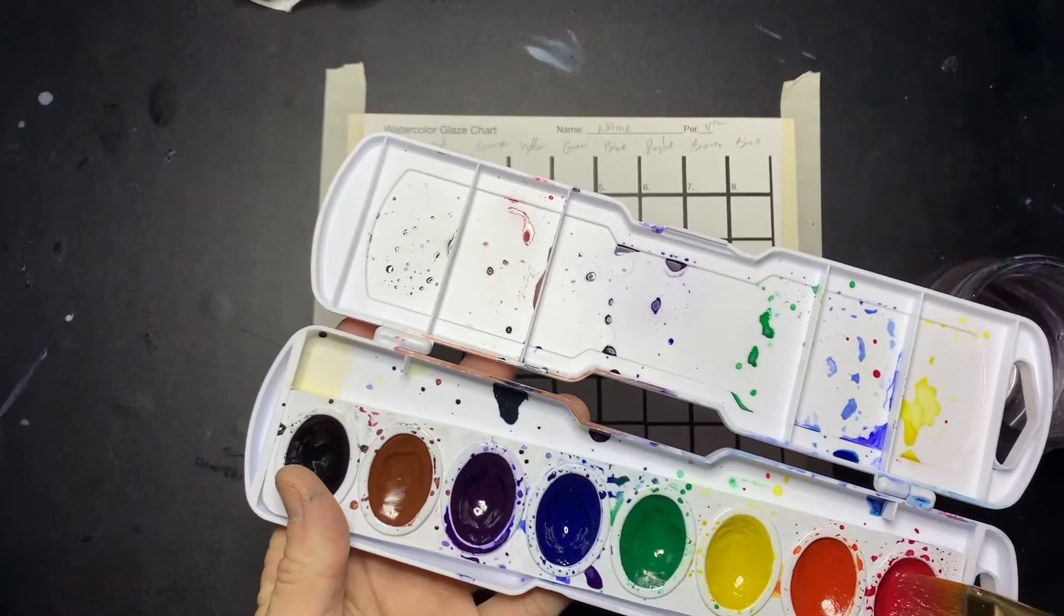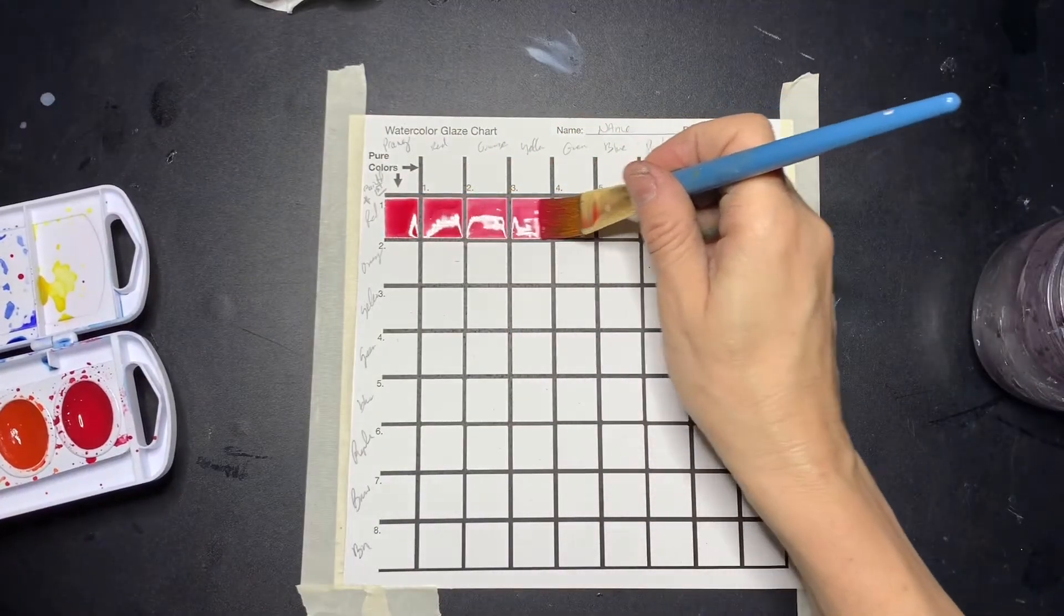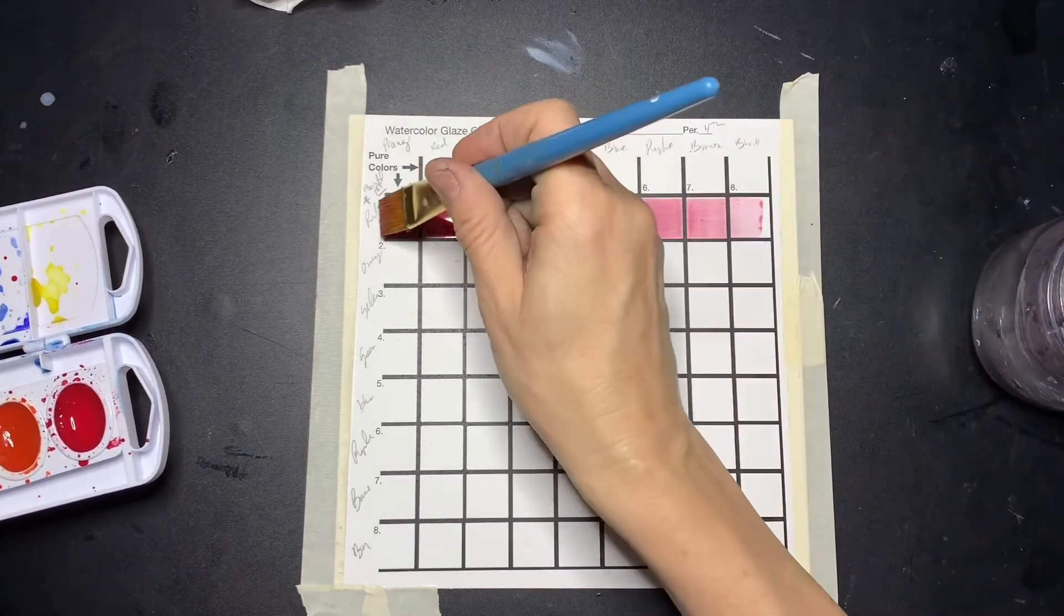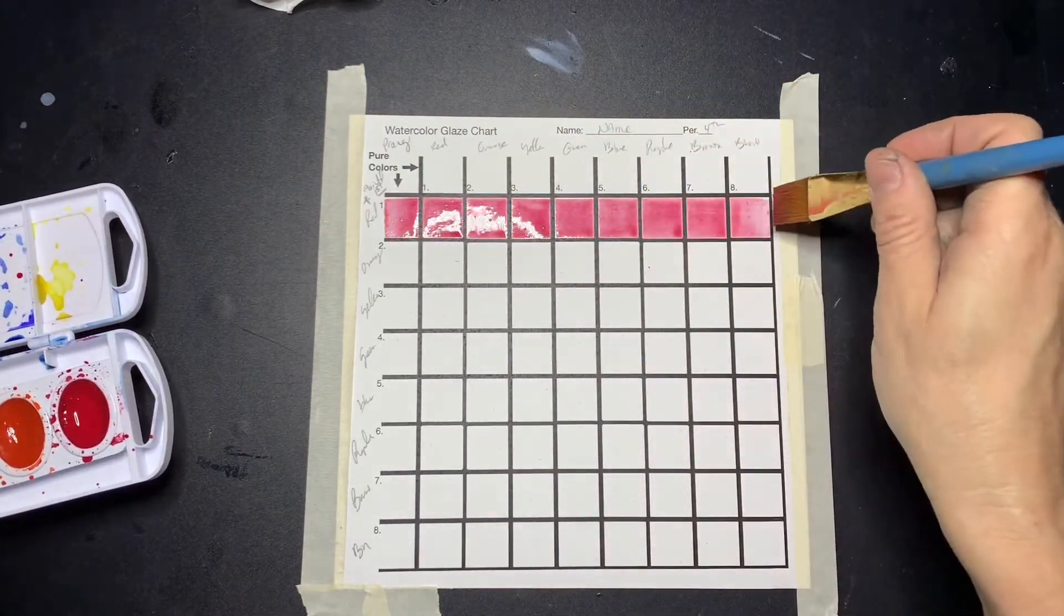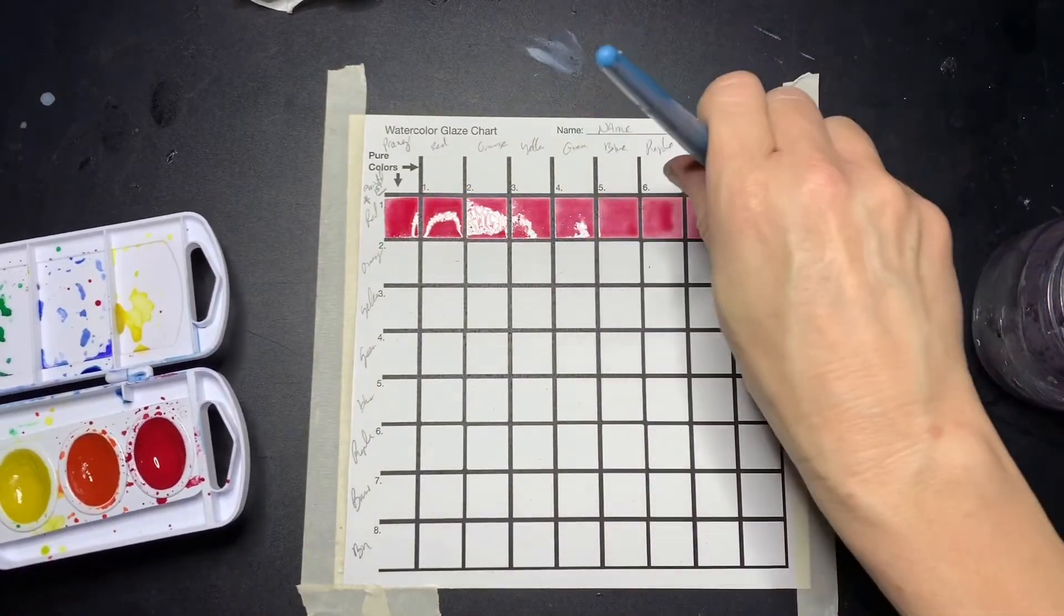Grab your first color and you're going to do a swipe all the way across a row like that. Or if you did the columns, that's fine too. Make sure that is as even as you can get it.